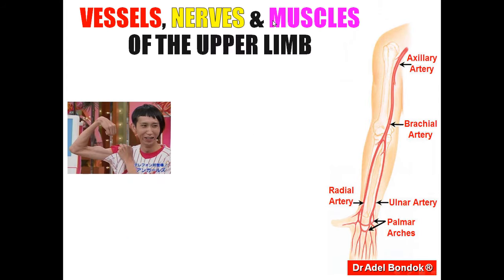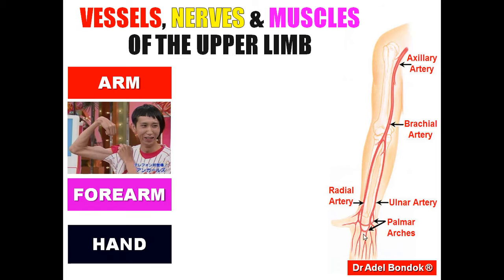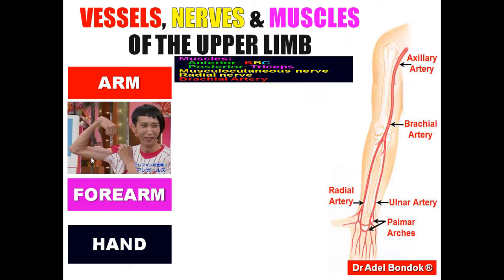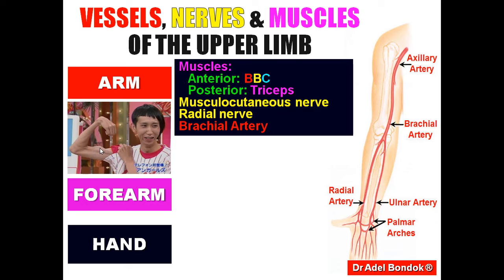Regarding the vessels, nerves, and muscles of the upper limb — the arm, forearm, and hand. Each region contains muscles, the nerve supplying these muscles, and an artery. The arm is divided into anterior and posterior compartments. The anterior compartment contains three muscles: BBC — biceps, brachialis, coracobrachialis. The posterior compartment contains only one muscle: the triceps. The anterior compartment is supplied by the musculocutaneous nerve, which supplies the biceps, brachialis, and coracobrachialis. The triceps is supplied by the radial nerve, and the artery is the brachial artery.